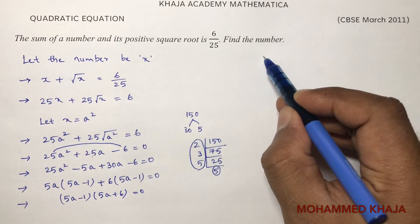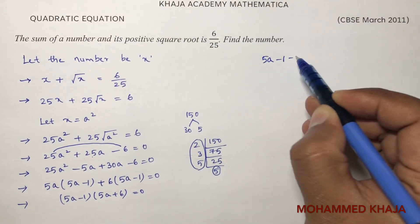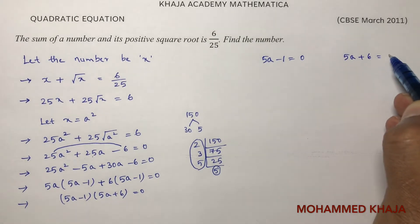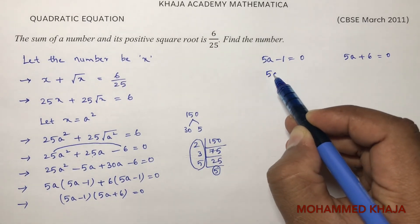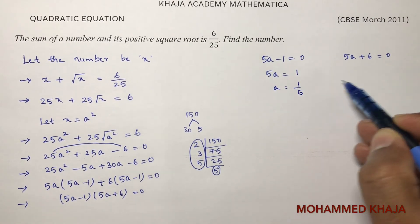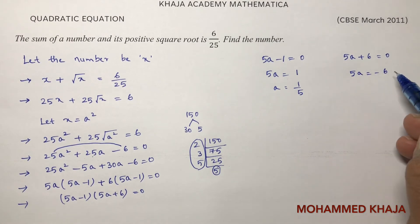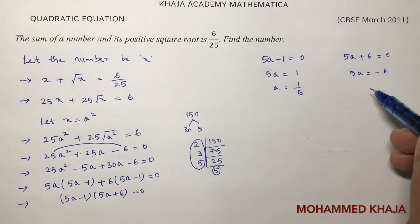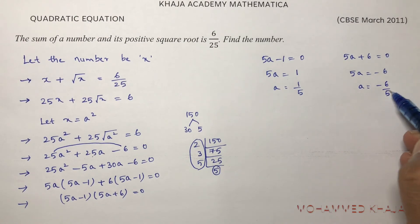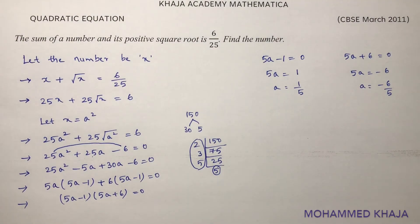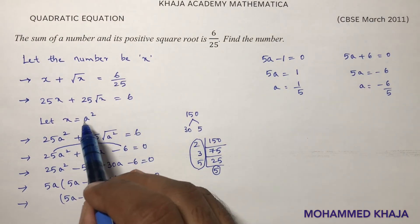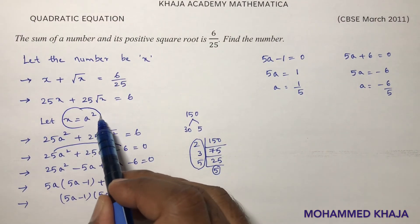So: 5a minus 1 equals 0 or 5a plus 6 equals 0. From the first: 5a equals 1, so a equals 1/5. From the second: 5a equals minus 6, so a equals minus 6/5.